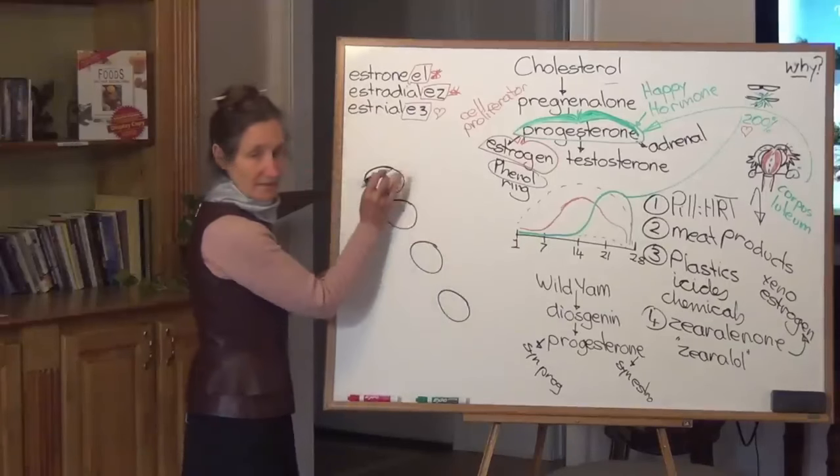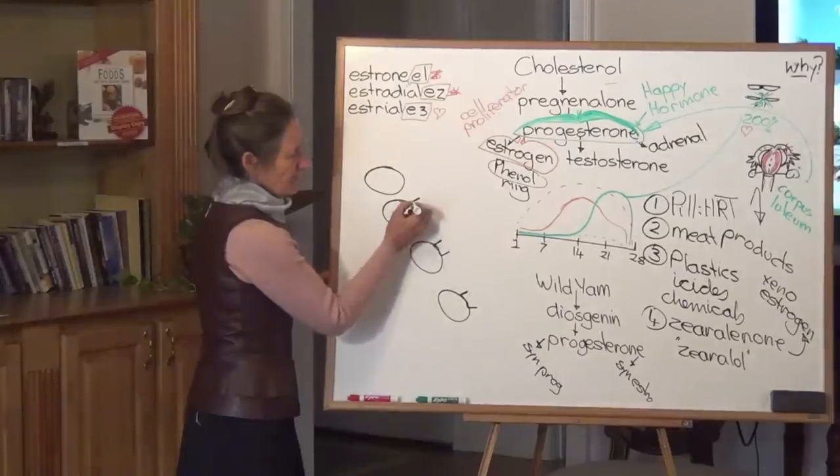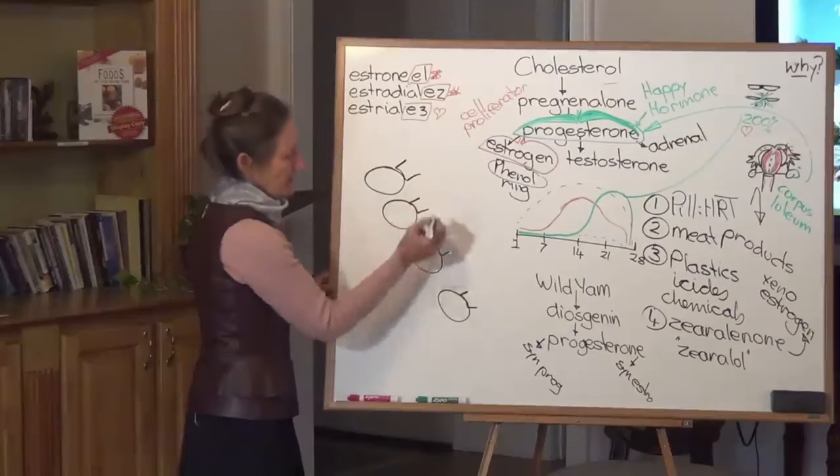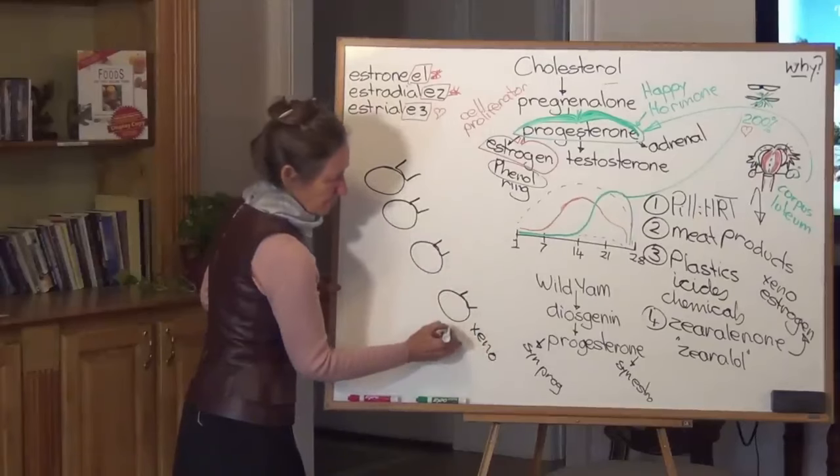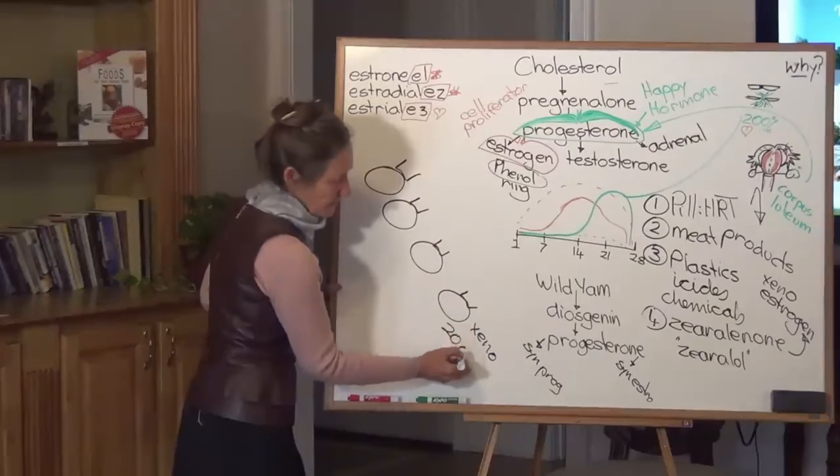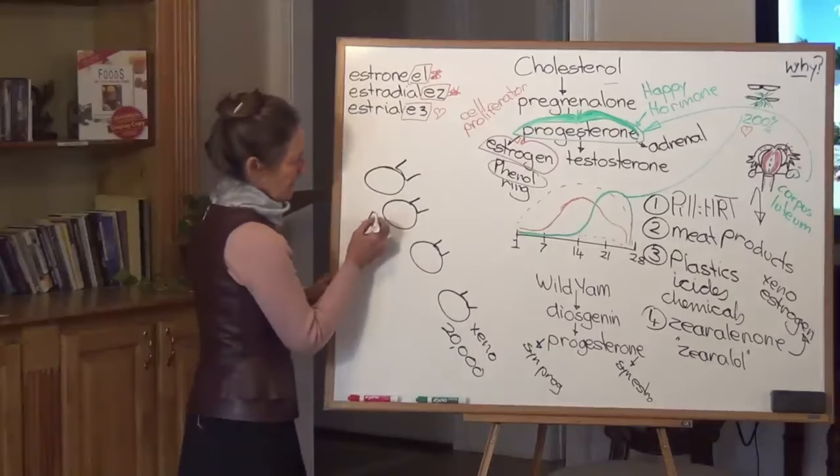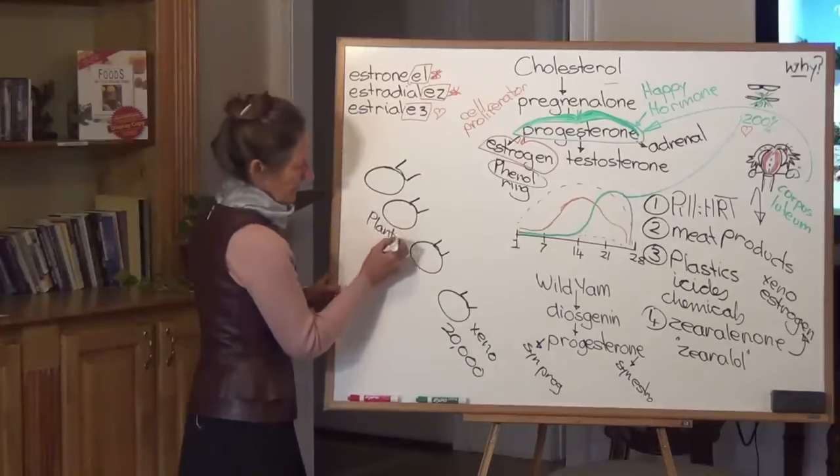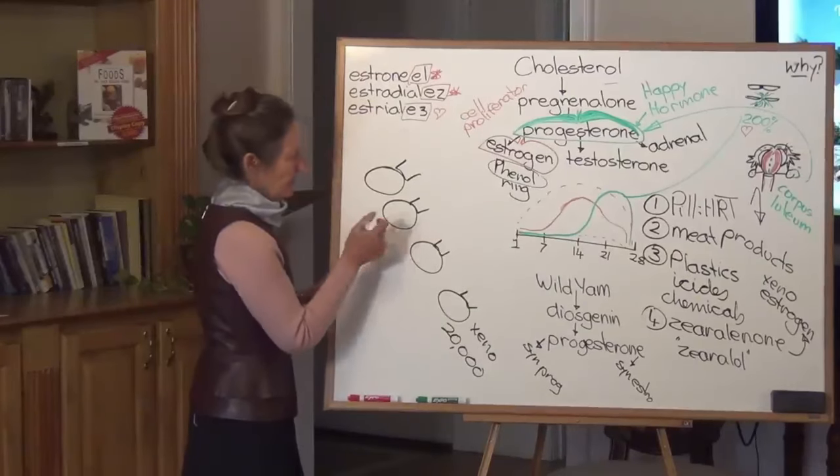So they discovered that women were eating meat in pregnancy that had the zearalenone causing it to grow quickly. And then that was affecting their babies. So their babies were going through puberty at five years of age. This is in Puerto Rico, 1985.